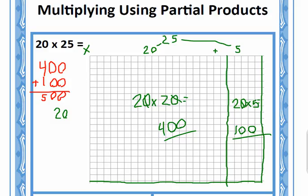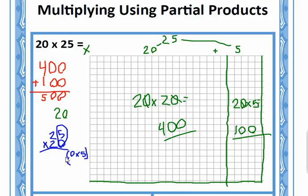So partial product — how is partial product the same? Let's look at partial product for this one. So we have 25 times 20. Again, it's easier for me to put the bigger number on top, but it doesn't really matter. If you're doing two-digit by two-digit, you're going to do the same thing. So if I was going to multiply everything by this digit, we can see why we'd have zero. Multiply everything by this digit — we'd have zero times five.